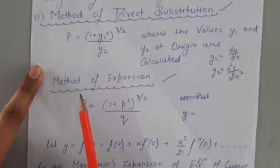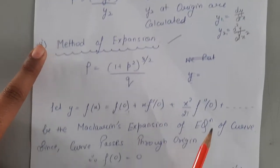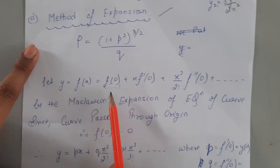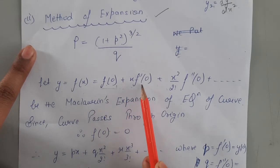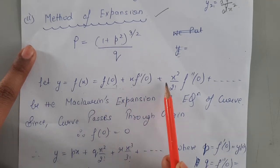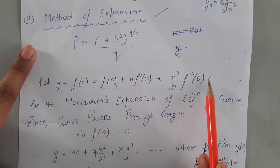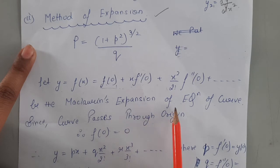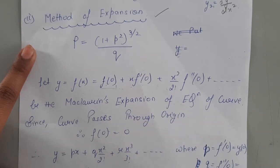Next comes the method of expansion. In this method, we use McLaurin's expansion of the curve: y = f(x) = f(0) + x·f'(0) + (x²/2!)·f''(0) and so on. This was also covered in Chapter 3.